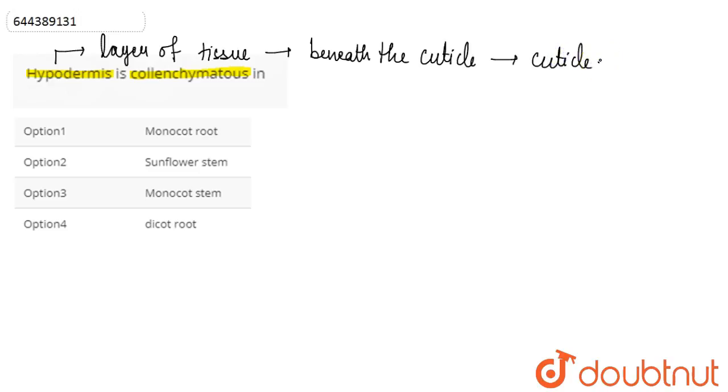It often expands to form longitudinal cords between the muscle fields. If we talk about where we see collenchymatous hypodermis, it's a feature of dicot stems only. We see collenchymatous hypodermis in case of dicot stems.